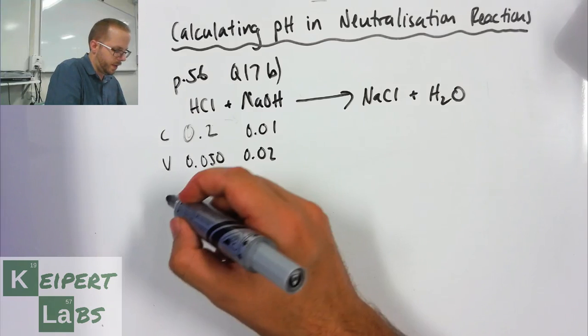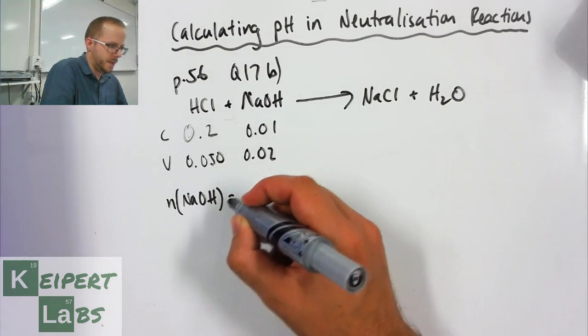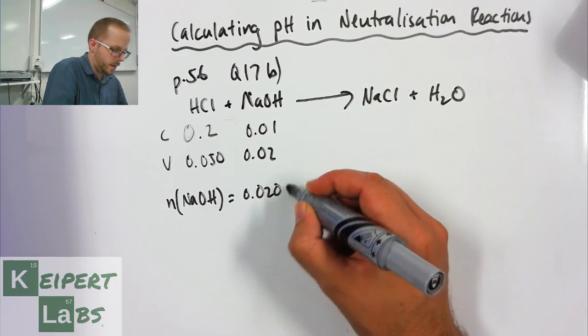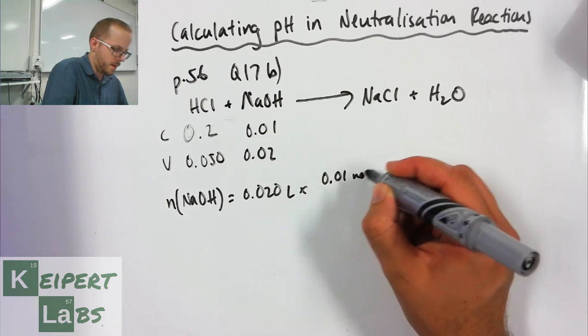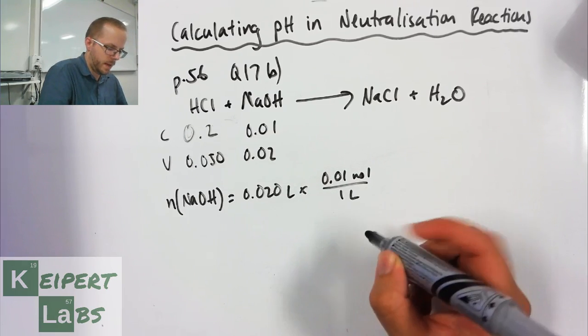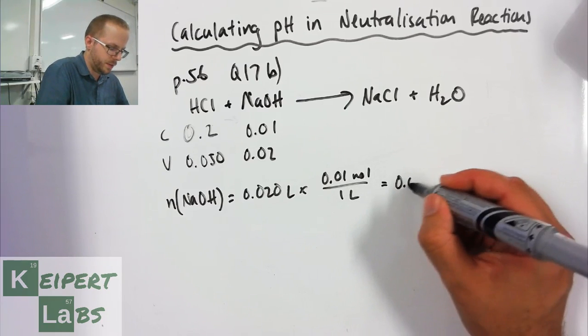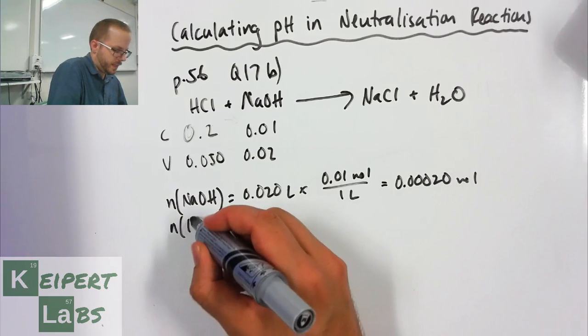So we can work out that the moles of sodium hydroxide is equal to our volume times our concentration. Our litres will cancel and so we get a value of 0.00020 moles for our hydrochloric acid.